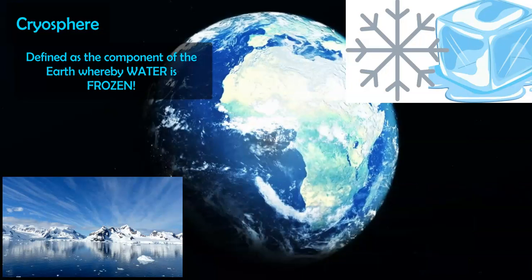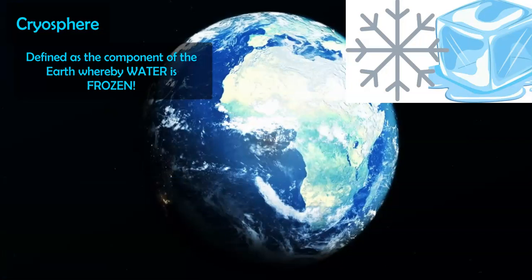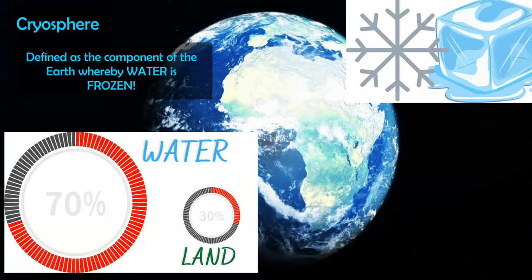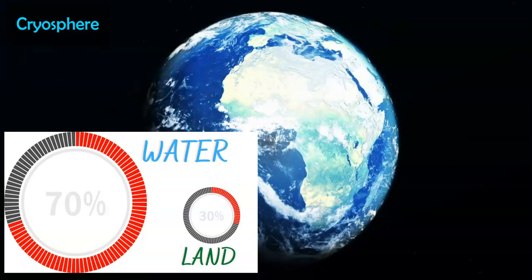The Earth has 70% water — parts of that are obviously frozen or in water vapor, which is part of the atmosphere — and 30% land, which is the geosphere part of this system.